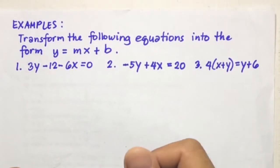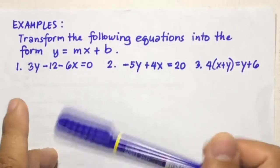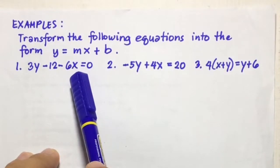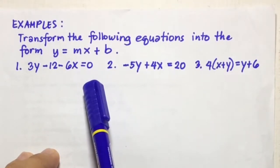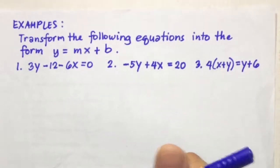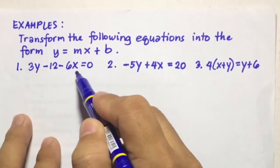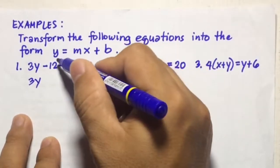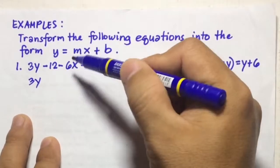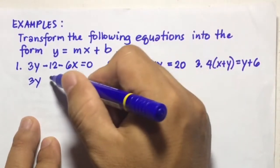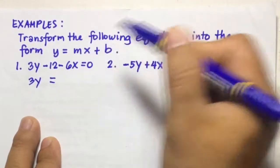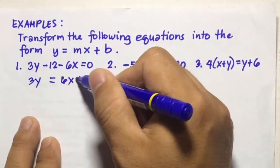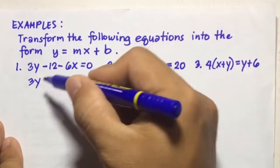To solve this problem, you're going to put the Y terms on the left side of the equation and the X terms and the constant term on the right side. So from 3Y minus 12 minus 6X, we keep 3Y on the left and transpose negative 12 and negative 6X to the right side. So we get 3Y equals 6X, and negative 12 becomes positive 12.